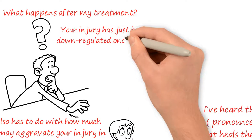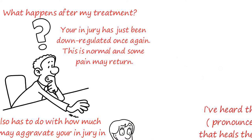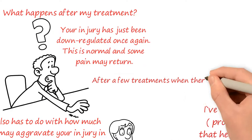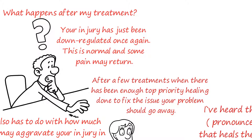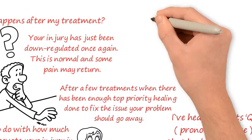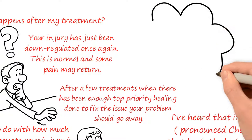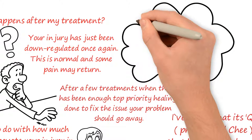Your injury has just been down-regulated once again. This is normal and some pain may return. So we do another treatment. We override the maintenance schedule once again, put the troops on alert, and get them fixing the area as the top priority. Most likely, after a few treatments when there has been enough top priority healing done to fix the issue, your problem should go away. Please try not to aggravate your injury while your troops are hard at work.